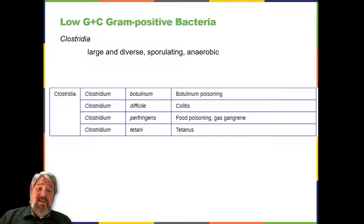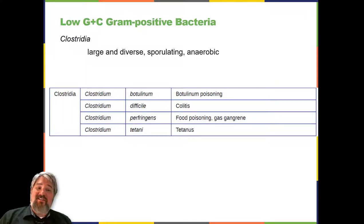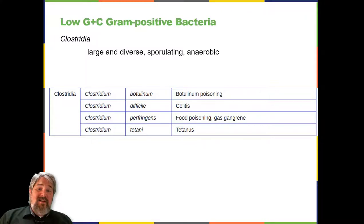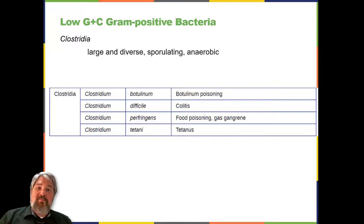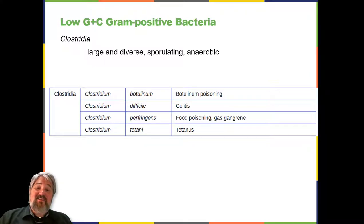Gas gangrene occurs when C. perfringens endospores enter a wound and germinate, becoming viable bacterial cells and producing a toxin that can cause the necrosis — death — of tissues. Clostridium tetani, which causes tetanus, produces a neurotoxin that is able to enter neurons, travel to regions of the central nervous system where it blocks the inhibition of nerve impulses involved in muscle contractions, and cause a life-threatening spastic paralysis.